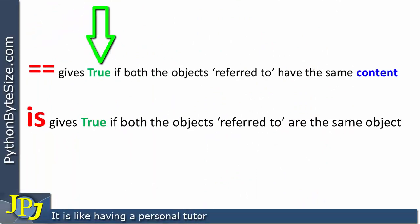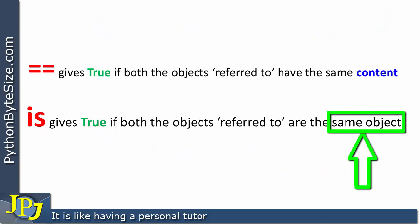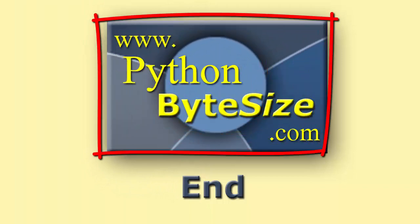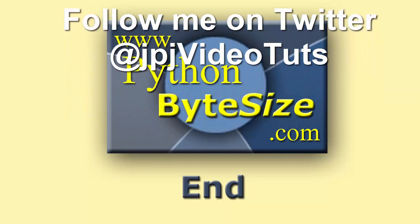To conclude: `==` returns `True` if both objects referred to have the same content, whereas `is` returns `True` only if both names refer to the same object. My recommendation going forward: avoid thinking of a variable in Python as a box into which a value is stored. Instead, think of Python variables as names that are bound to instances of classes — objects. The name is bound to the object, and the object has content, which could be an integer, a list, a dictionary, and so on. Names are bound to objects.